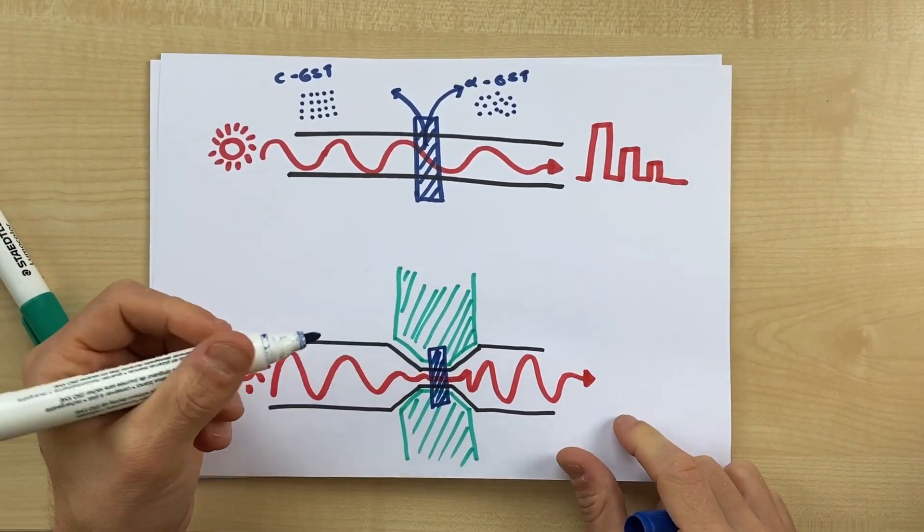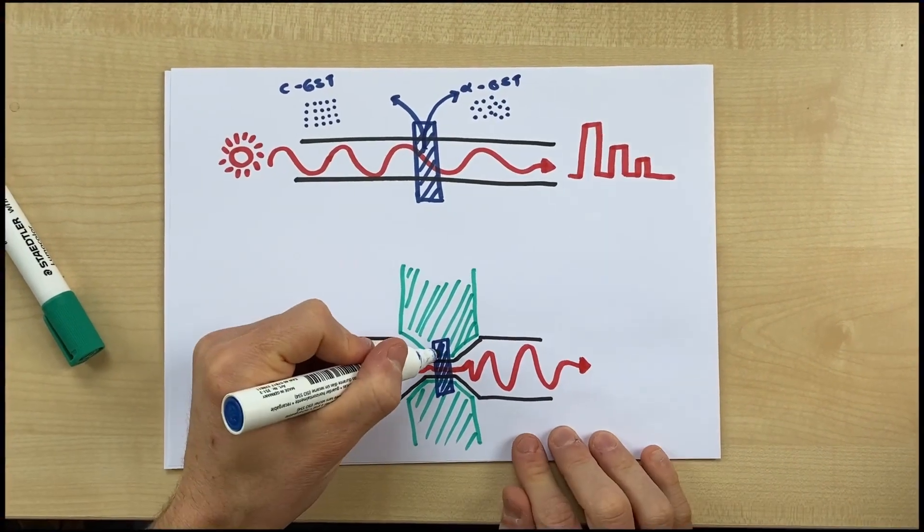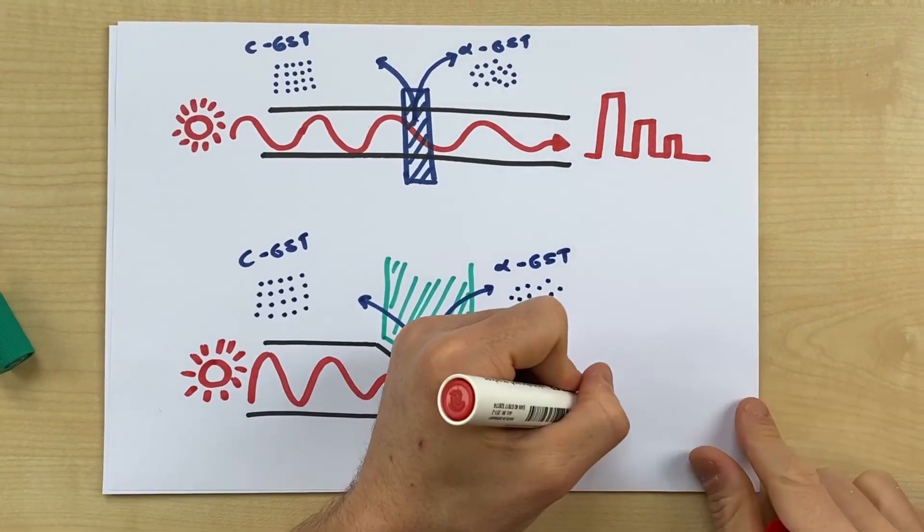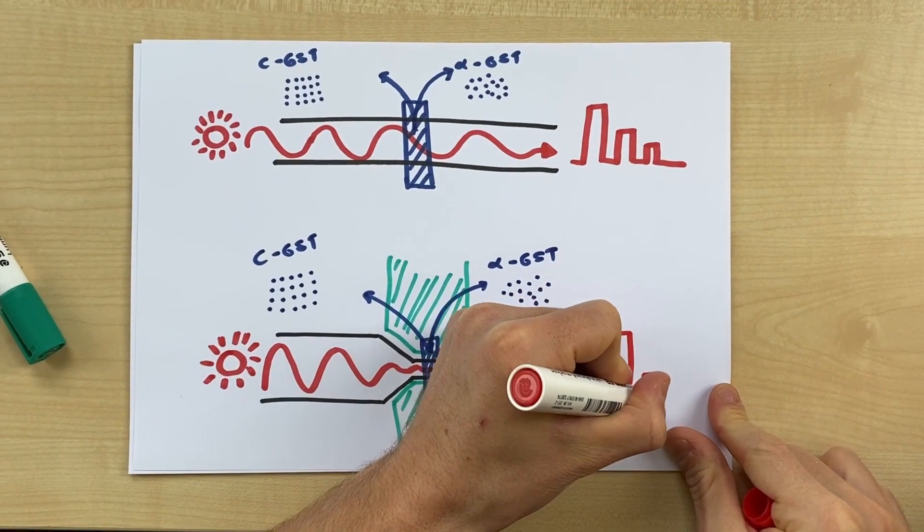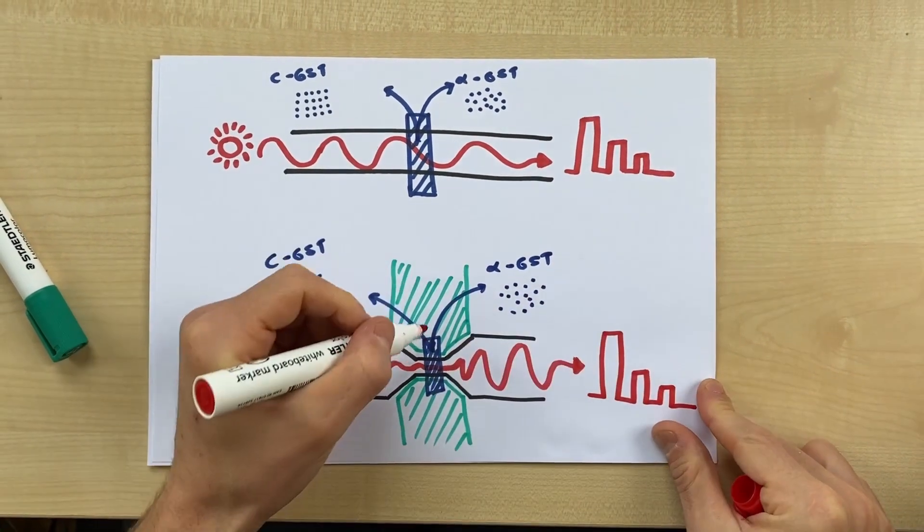By changing the state of the phase-change element, we are able to send electrical and optical pulses to set the state of the material and monitor the output both electrically and optically.